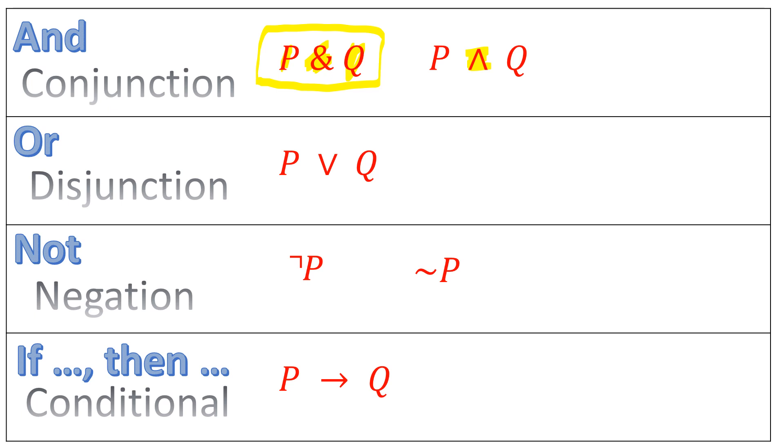We have the or, which is a disjunction. The or, we symbolize with a descending wedge. It looks like a V. We say P or Q, which means P is the case, or Q is the case, or both are the case.